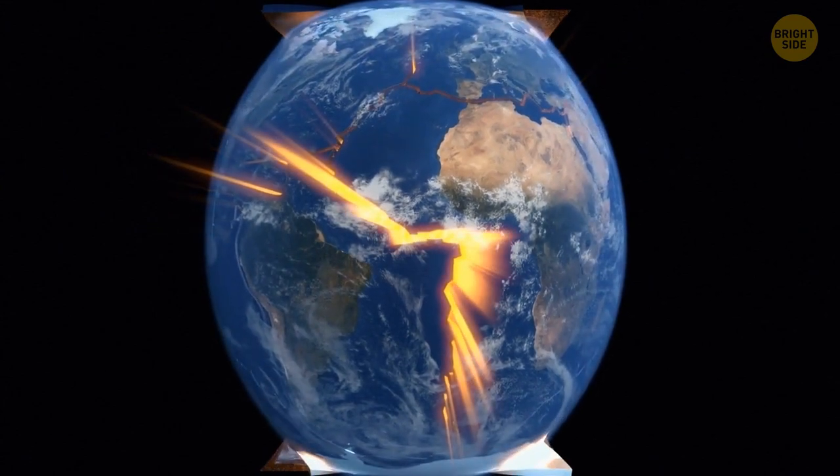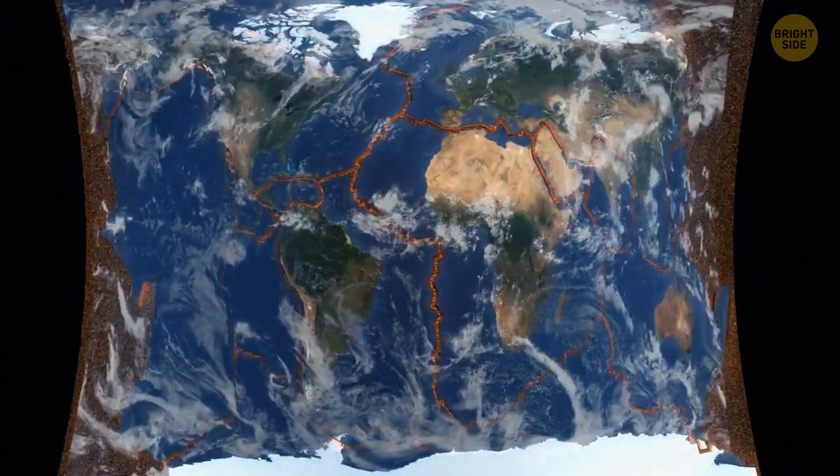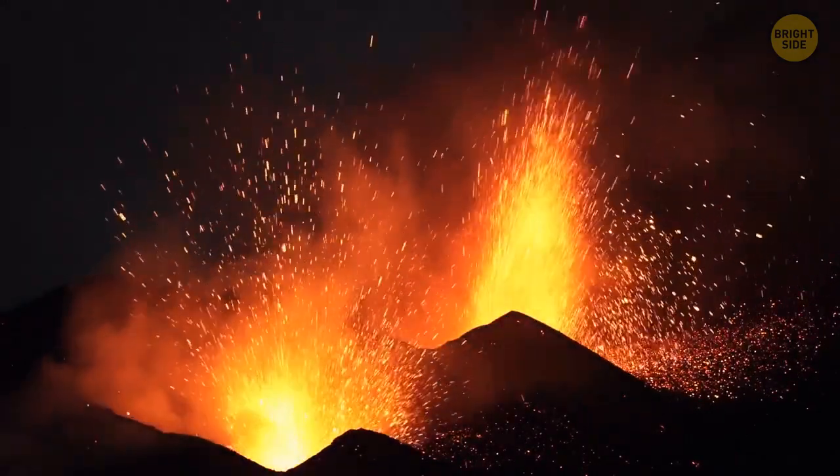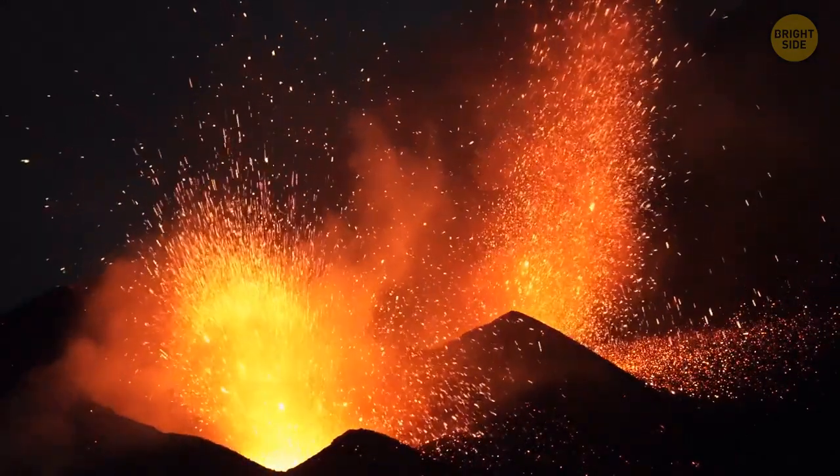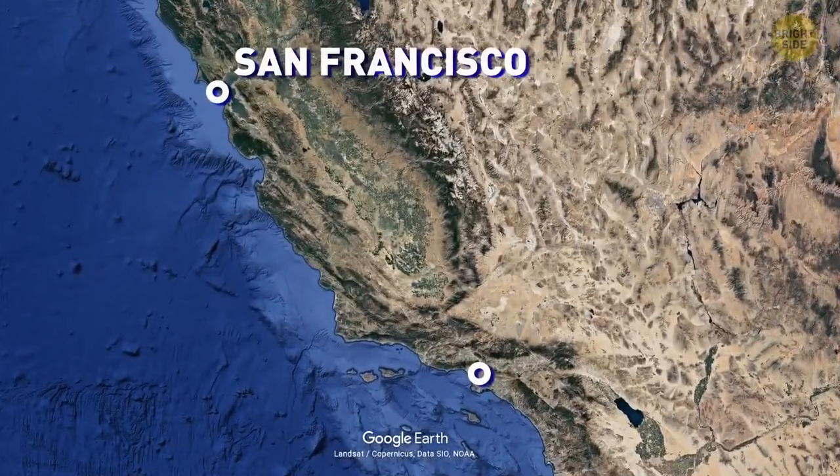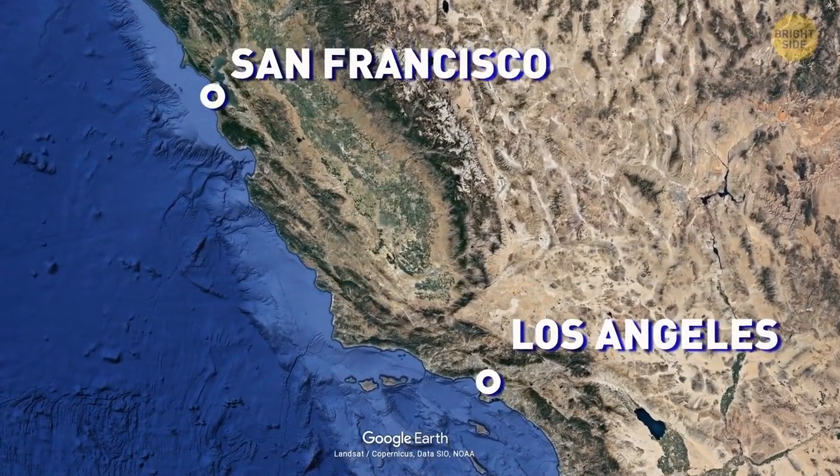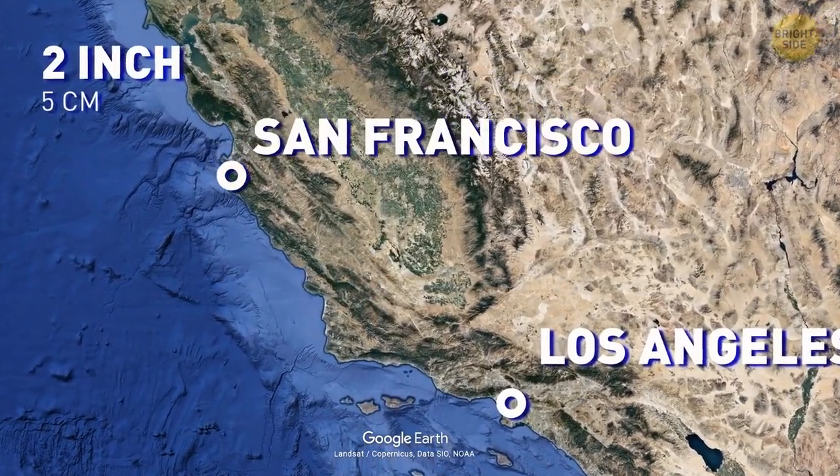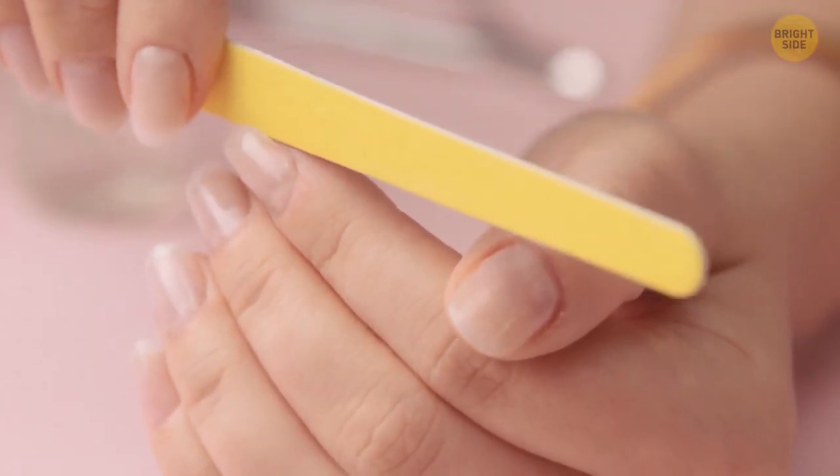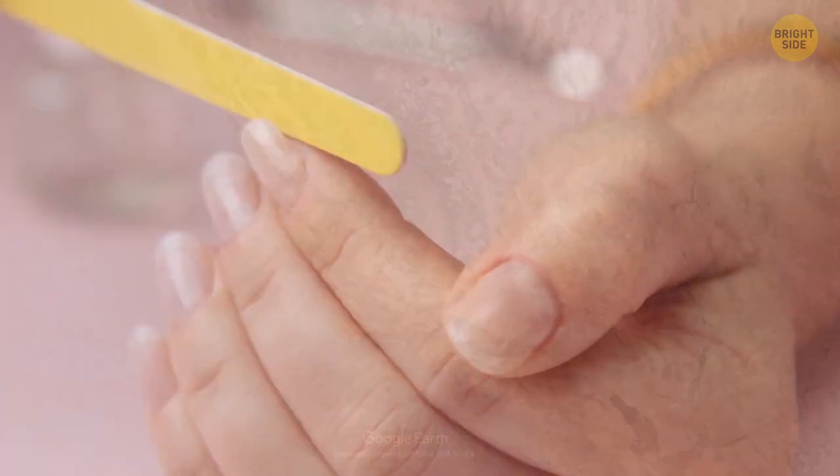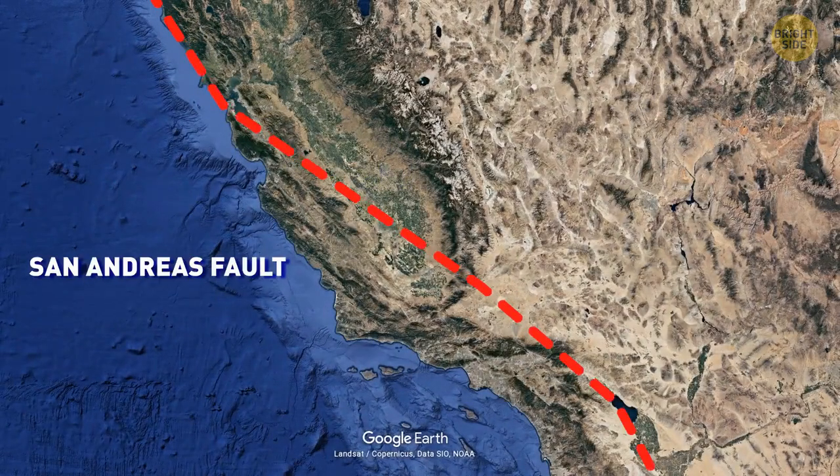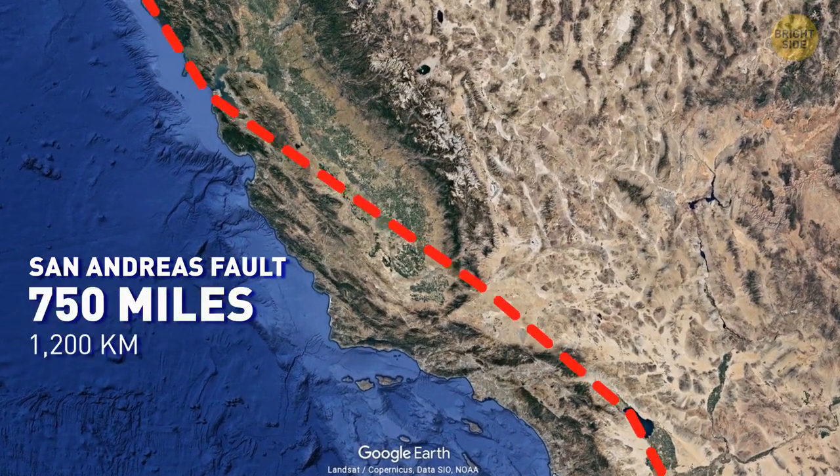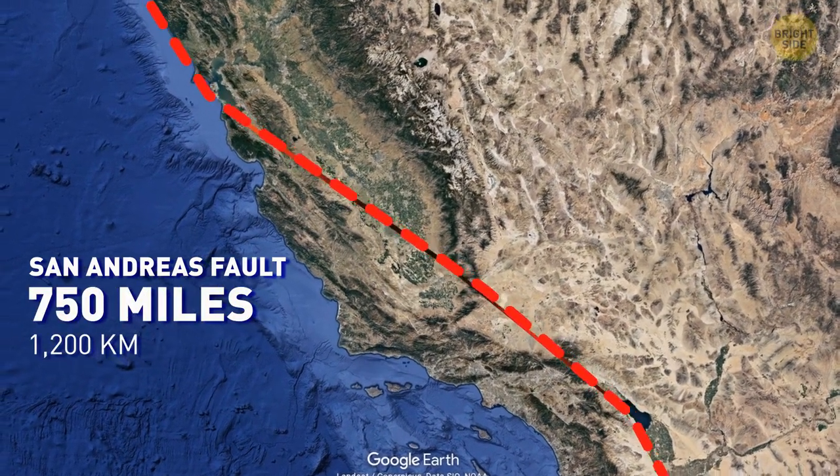Earth's surface consists of 15 to 20 constantly moving tectonic plates. Pressure increases when they shift, and this can make the crust of our planet break. San Francisco is moving toward Los Angeles right at this moment. The speed of its movement is about 2 inches per year. That's as fast as your fingernails grow. It's happening because the two sides of the San Andreas Fault, which is the continental fault extending 750 miles through California, are slipping past each other.